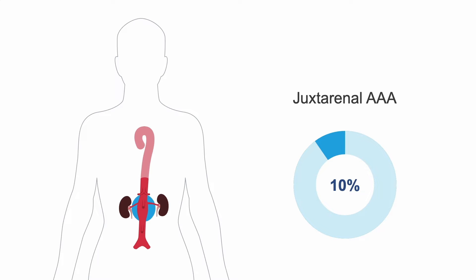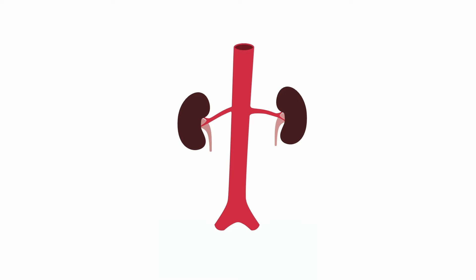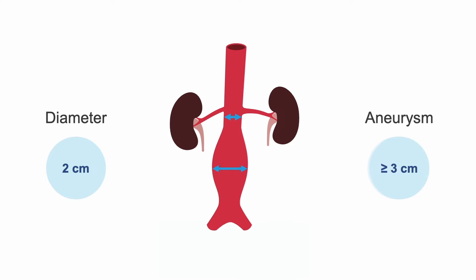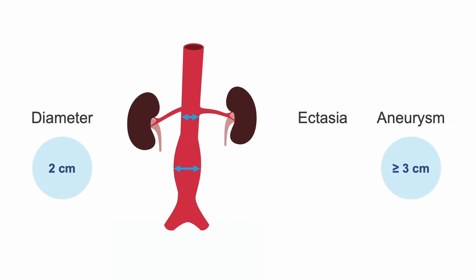We will introduce AAA surgeries in the next lesson. Aorta anatomy and size is generally consistent across age, race, and gender, though women sometimes have slightly smaller vessels. The distal abdominal aorta has an average diameter of 2 cm across all races and genders. Remember the rule that an aneurysm is a 50% or greater increase in diameter from the nearest proximal segment — that defines distal AAAs as measuring 3 cm or more. The size of abdominal aortic ectasia ranges between 2.4 and 2.9 cm.